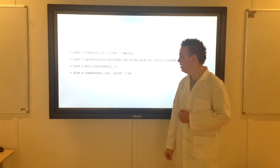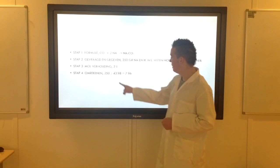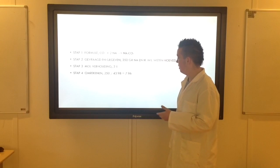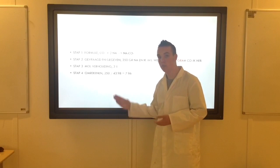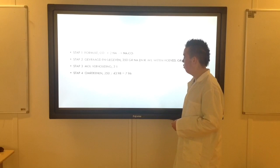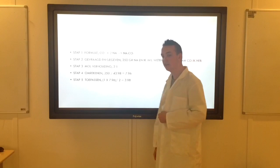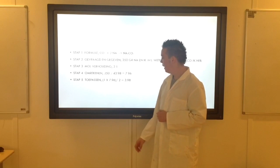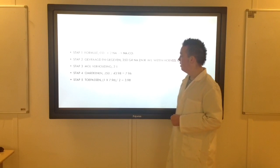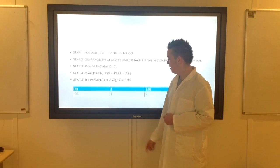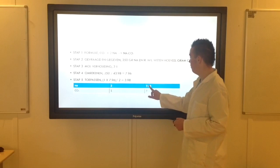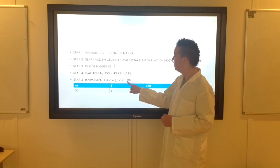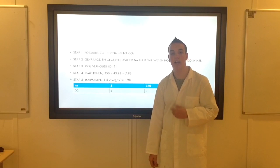Dan gaan we naar stap 4. Dus het omrekenen. Die 43,98 is van het natrium. Dus dan delen we die 350 gram die we weten. Delen we door de molaire massa. Komt 7,96 uit. Weer niet volledig het getal. Wel even netjes afgerond. Anders wordt het zo geknoeid bij de hier. Dan gaan we het toepassen. Ook hier heb ik weer een prachtige tabel. Ik heb hier 2 staat op 1. En we weten 7,96. 1 keer 7,96 delen door 2 komt uit de 3,98. En weer afgerond.